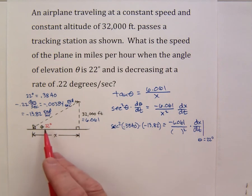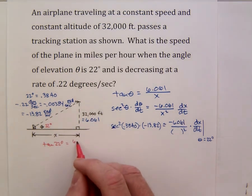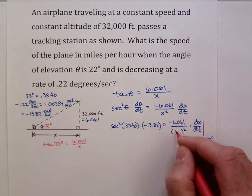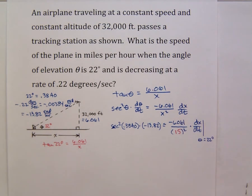If that were 22 degrees then we would be able to say that the tangent of 22 degrees or 0.3840 radians equals 6.061 over x. And so x at this instant is just going to be 6.061 over the tangent of 22 degrees. And that is very close to 15. So we'll plug that in there.